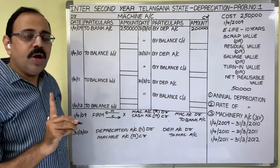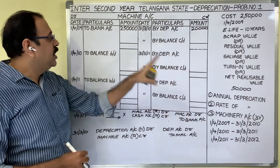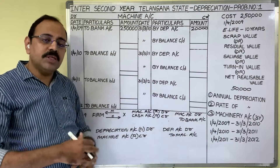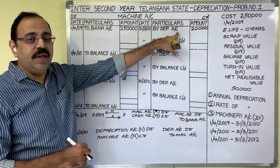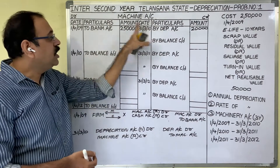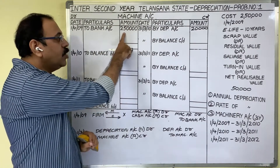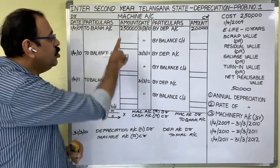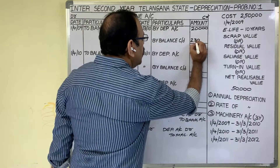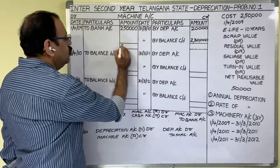Now we balance the account. The debit side total is more. Debit total minus credit total gives the balance carried down: 2,50,000 minus 20,000 equals Rs. 2,30,000. Write the totals on both sides. First year is now completed.